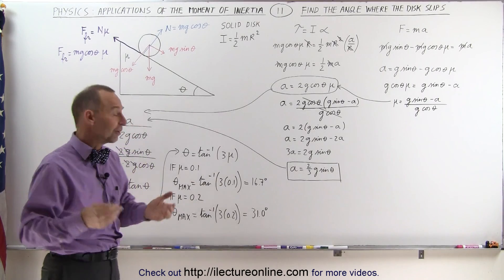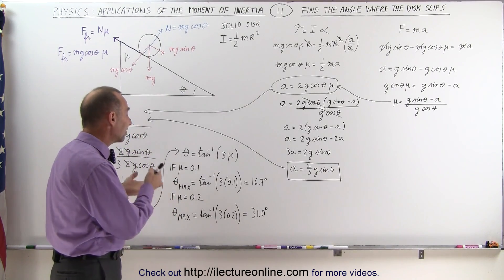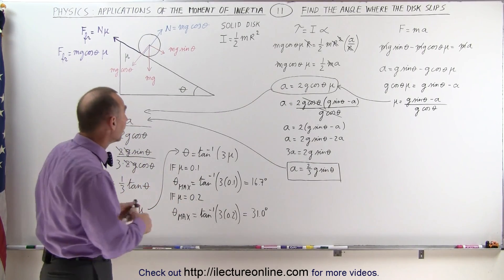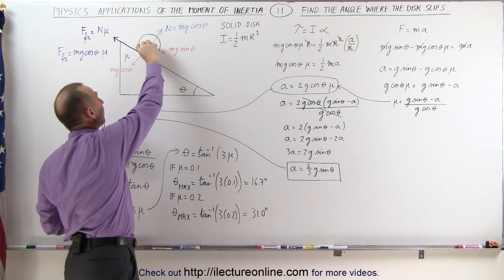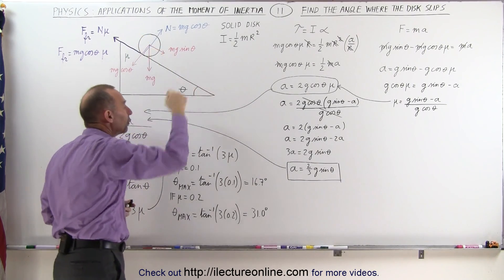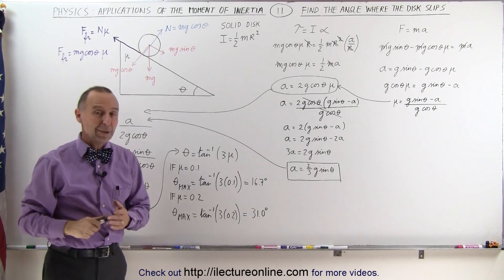So all we have to do is plug in various values for mu and it tells us what the steepest angle we can have is before the cylinder begins to slide rather than roll down the hill, and that's how we determine that.